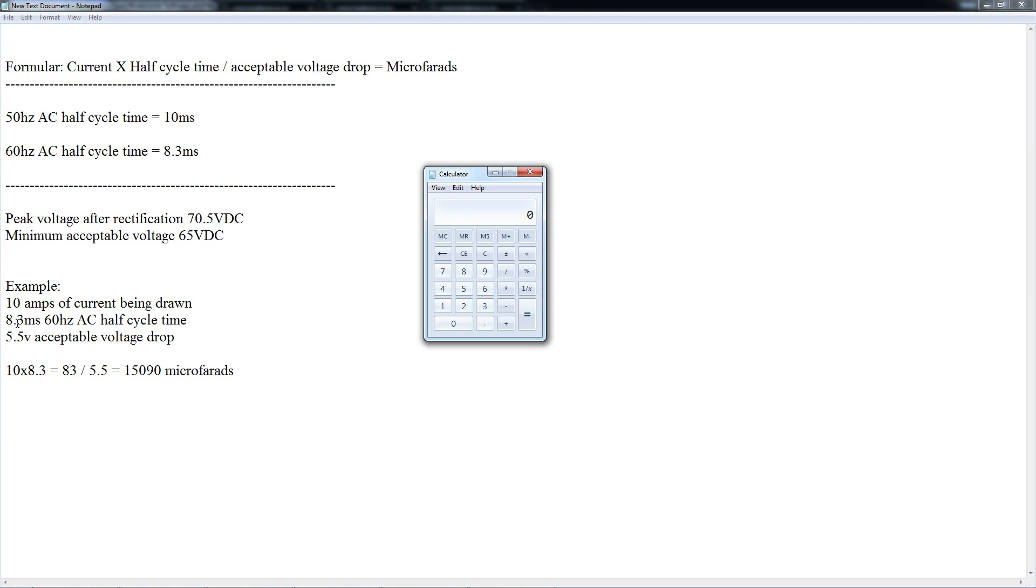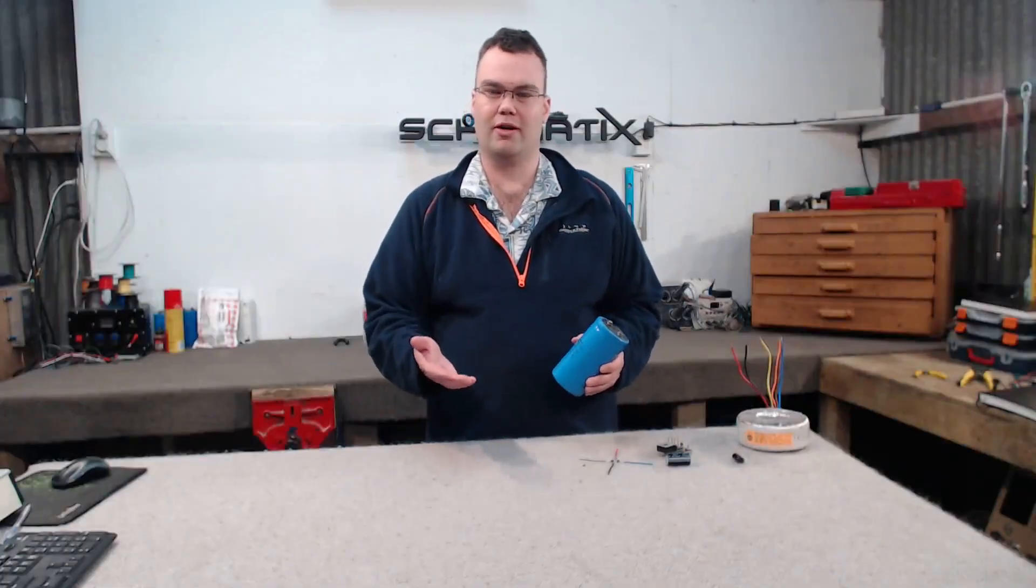Let's use this as an example. In this example, I'm drawing 10 amps of current maximum, so I'll put in 10 amps in my calculator. I'm going to times that by my half cycle time, in this example 8.3, hit equals, and then my acceptable voltage drop is 5.5. So I'm going to divide 83 by 5.5, and then we get a microfarad capacity of 15,090 microfarads. So chances are the capacitance you require is not going to be found on an off-the-shelf capacitor.